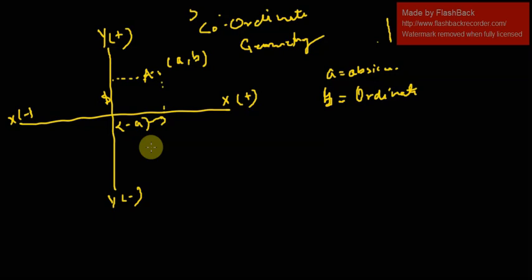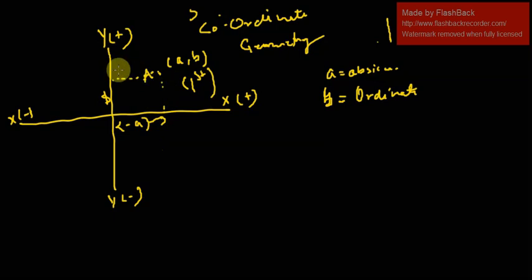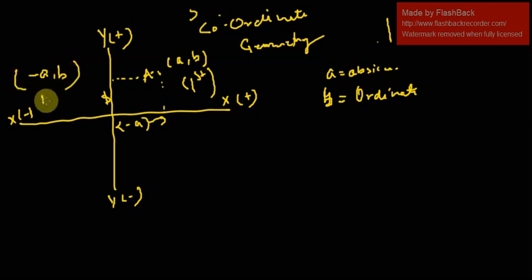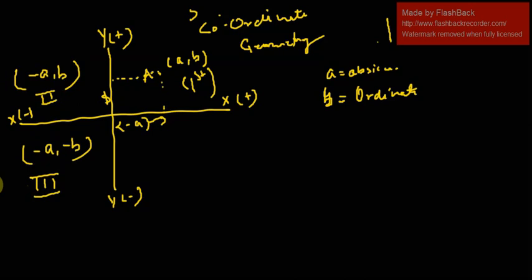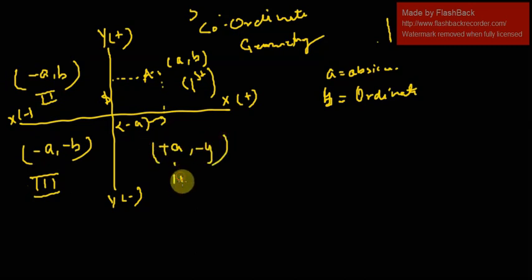If abscissa and ordinate are both positive, the point lies in the first quadrant where x and y are both positive. If the abscissa — that is, the value on the x-axis — is negative and the ordinate is positive, the point lies in the second quadrant. If the abscissa is negative and the ordinate is also negative, the point lies in the third quadrant.